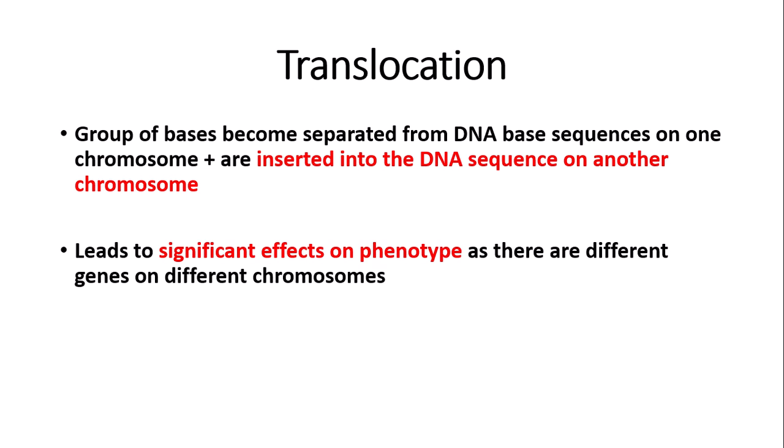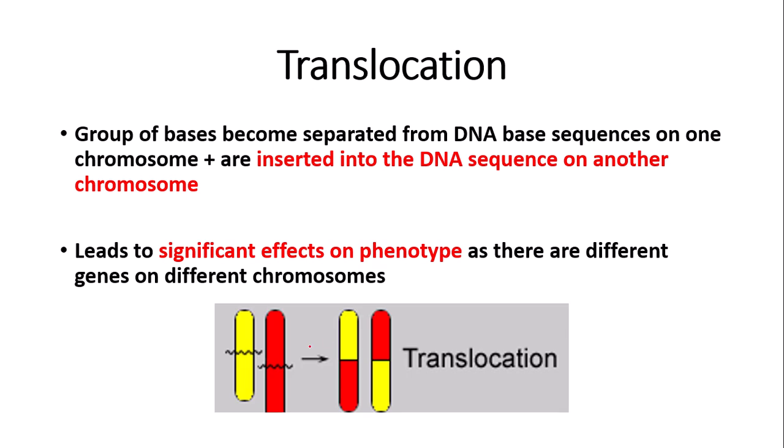Translocation can lead to a variety of diseases, such as infertility. Translocation has the most significant effect of all the different types of mutations, as the group of bases are moved to another chromosome — and different chromosomes that aren't part of the same homologue will have different genes and therefore code for different phenotypes. Here we have an image showing a translocation, where sections are being cut off and rejoining on the other chromosome, leading to a significant effect on the phenotype.